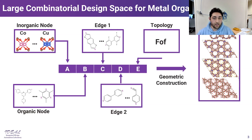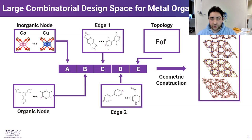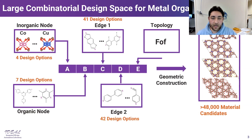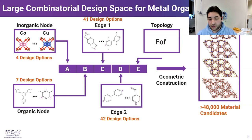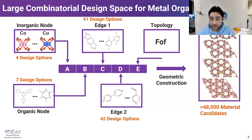Looking at the MOF material system shown here, by combining different inorganic nodes, organic nodes, edges, and topologies, we can construct the MOF system. The problem arises when we have a different number of design options for each of these building blocks, and for the application of interest, we have a total design space of more than 48,000 material candidates.